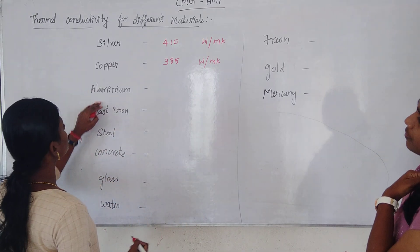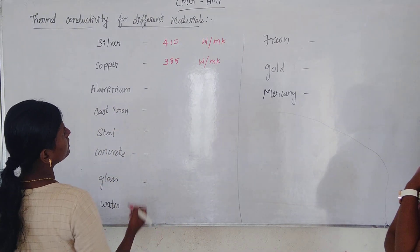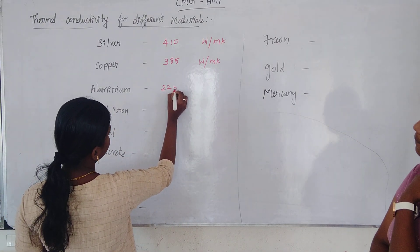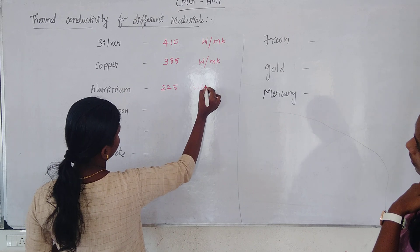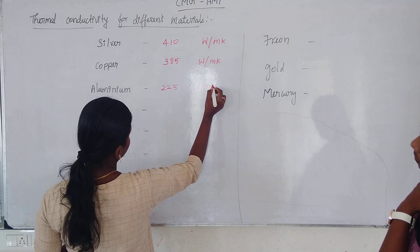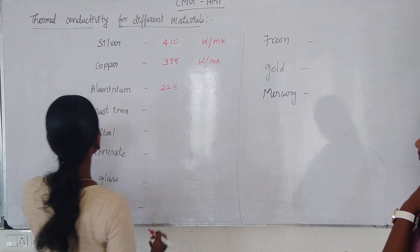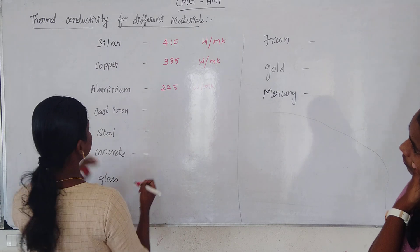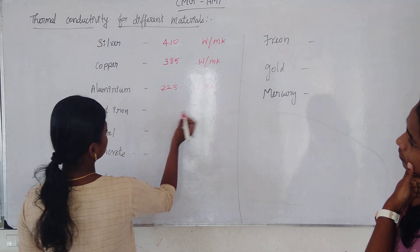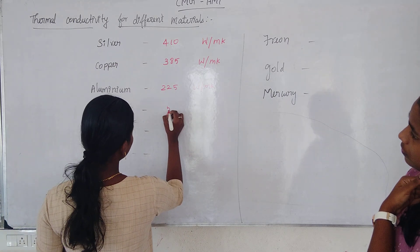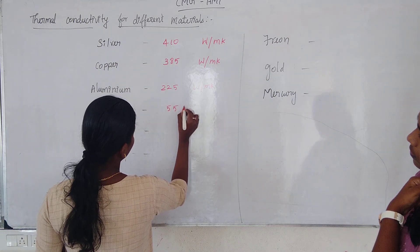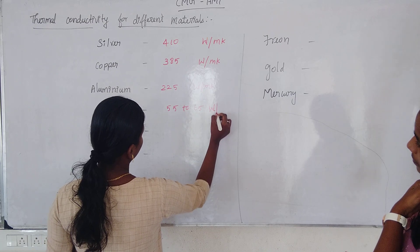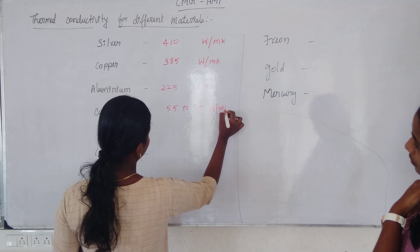The next material is aluminum. Aluminum's thermal conductivity is 225 watt per meter Kelvin. The next material is cast iron, with a thermal conductivity range of 55 to 65 watt per meter Kelvin.